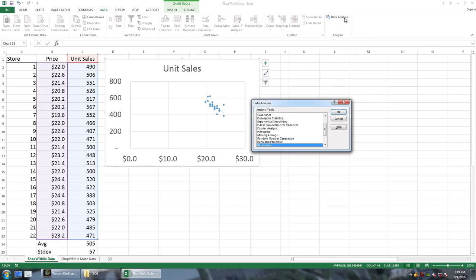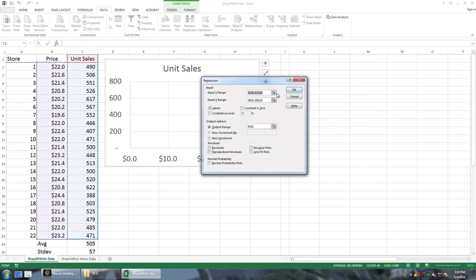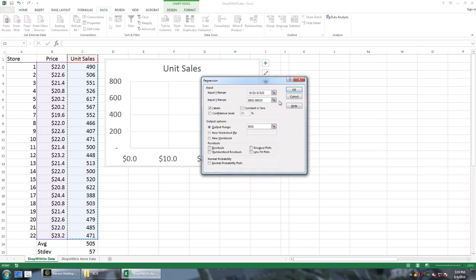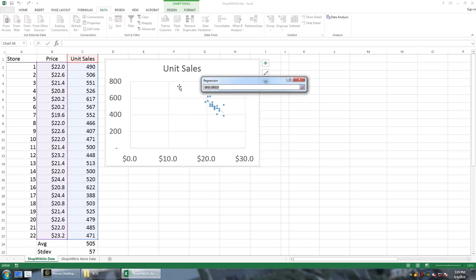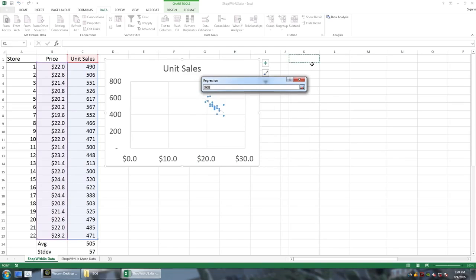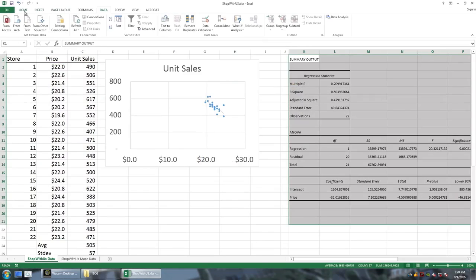Once we've added this, we can now click data analysis, choose regression, and in this dialog box, we're going to fill the following. First, we're going to choose our Y input. Our Y axis is our unit sales. So we're going to highlight this column of unit sales. We can also choose our X and in this case, our X is our price. So we're going to highlight the column of prices. There are labels in our top row. So we're going to tick this block that says label and we're going to choose where to put our output. Let's place it here in column K.